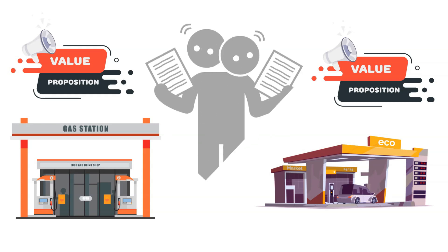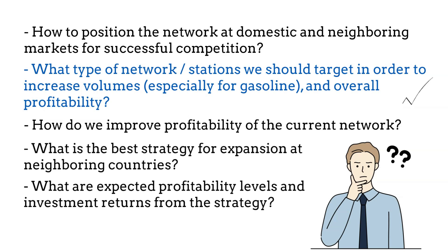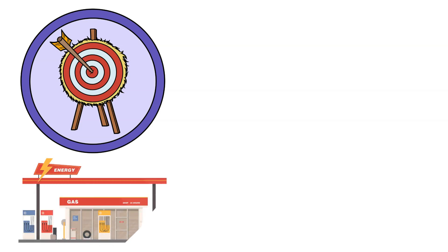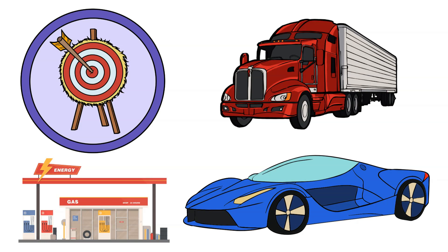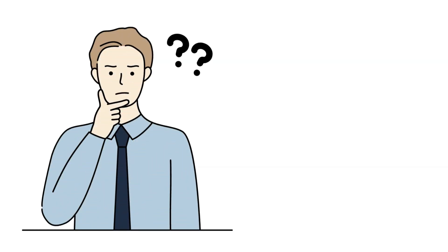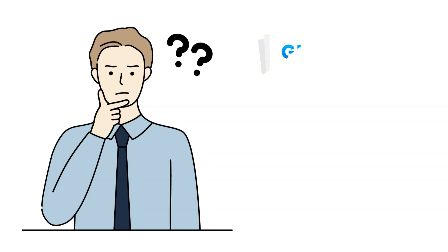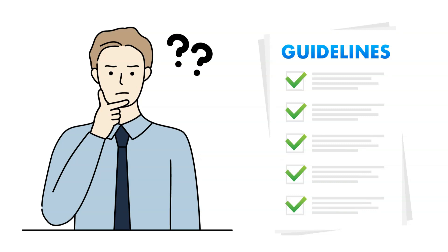Differentiation and better visual identity are needed anyway to stand out and attract more traffic. Next question: what type of network or stations should we target to increase volumes, especially for gasoline and overall profitability? The next step is defining our avatar or typical targeted fuel station within the network — related to the ideal customer question. Based on our own market research and company data, we can set the following guidelines.